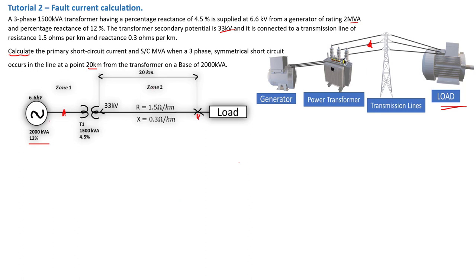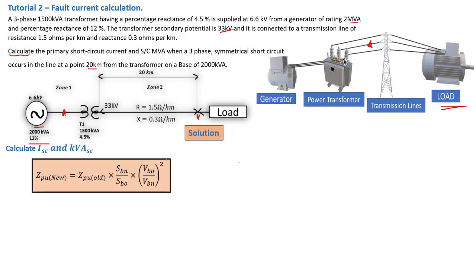To calculate the short circuit current and short circuit MVA, we need to find the per unit values — for the generator, the transformer, and the line. There are per unit tutorials available on this channel, and links for tutorial 1 and tutorial 2 on the per unit series are included in the description box.